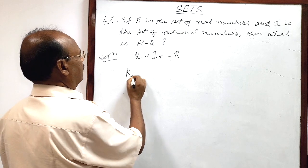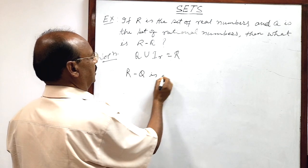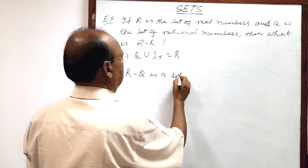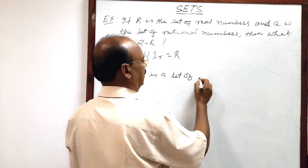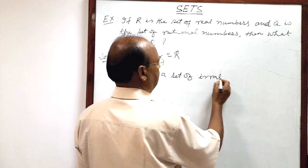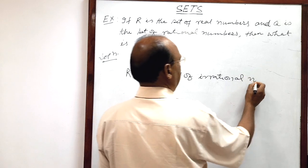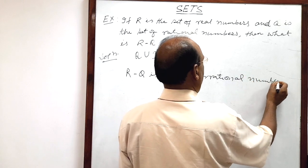Here R minus Q is a set of irrational numbers.